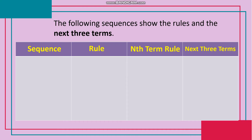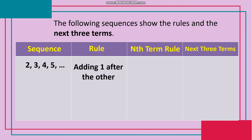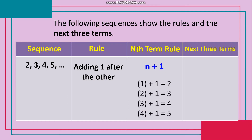Dahil may idea na tayo sa tatlong strategies, pag-aralan naman natin ngayon ang iba pang examples of sequence. The following sequences show the rules and the next three terms. Sequence: 2, 3, 4, 5, and so on. Rule: adding one after the other — mag-add ng 1 pagkatapos ng naunang mga number. Nth term rule: n plus 1. Let n be the 1st term: 1+1=2; 2nd term: 2+1=3; 3rd term: 3+1=4; 4th term: 4+1=5. Dito nakuha sa nth term rule ang 2, 3, 4, and 5 sa sequence.